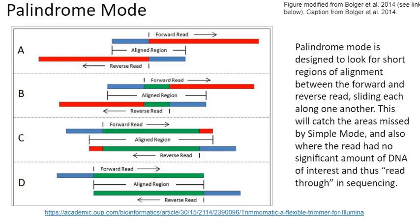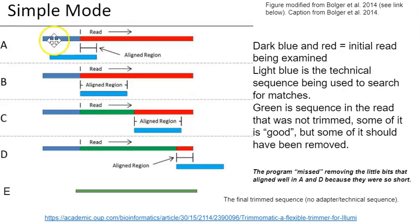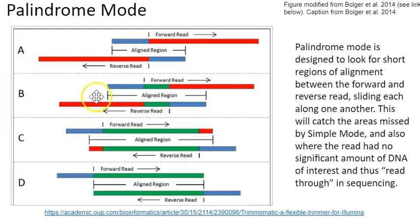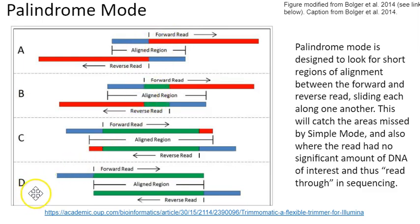In Palindrome mode, it's designed to look for short regions of alignment between the forward and the reverse read. So it's taking the forward read and the reverse read together, whereas in Simple mode we were looking at one read at a time, marching along looking for adapter sequence. Now we're taking the two reads that go together — Trimmomatic can tell that because of the information in the Illumina file header — and marching them side by side, looking for areas where they align. Anywhere they align is an indicator of read-through, and that sequence data would be discarded.